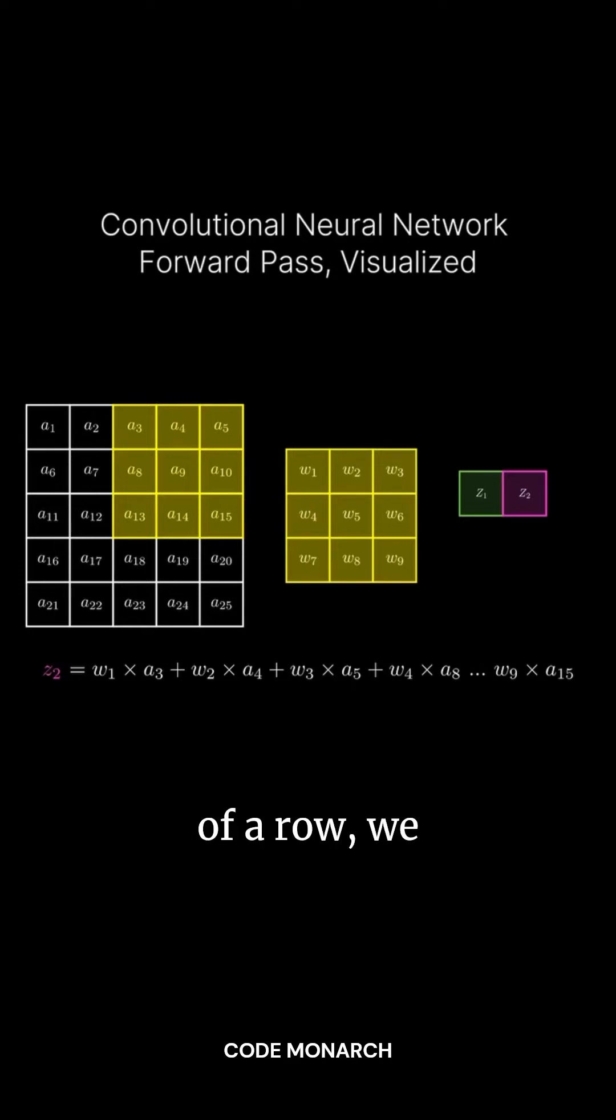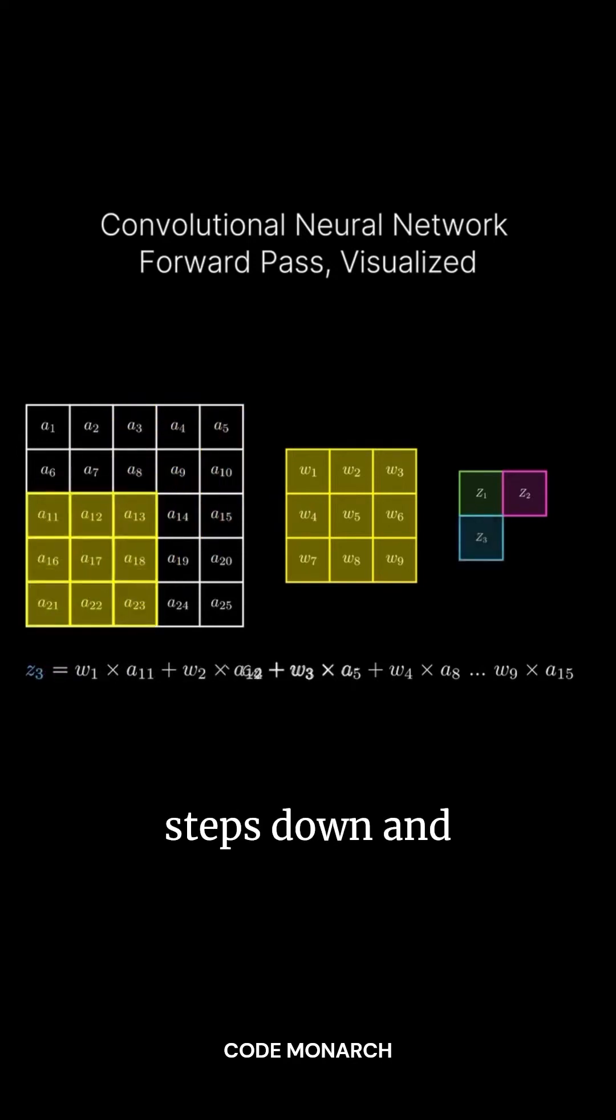When we reach the end of a row, we move the kernel two steps down and start again from the left. This generates Z3.